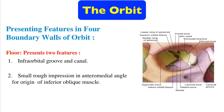The floor of the orbit presents two features. First: the infraorbital groove and canal. Second: a small rough impression in the anteromedial angle for the origin of the inferior oblique muscle.